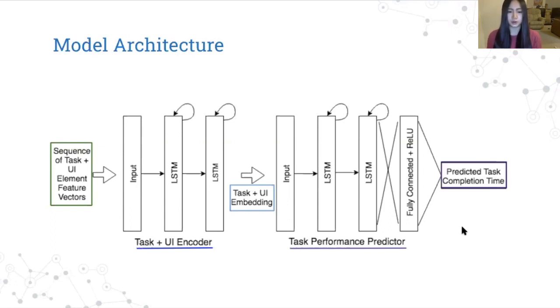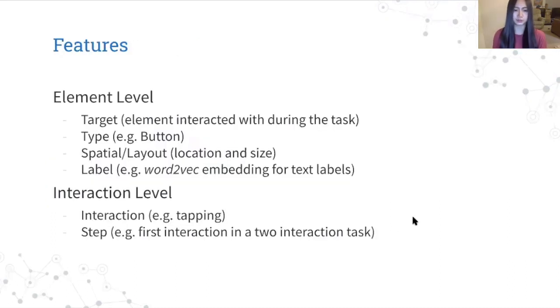So compared to the menu model, we have an additional LSTM layer in both the encoder and predictor to account for the increased complexity of our problem. Our features were selected because they will have an effect on task performance. So for each UI element, we have 13 different features that could be divided into these four categories. We have the target feature, which indicates if the element will be interactive during the task. And next, we have the element's type, and the element's type affects its saliency, as well as how users will interact with it. And then we have the layout features, so the size and location of each element. And our model also handles grouped elements, like a group of buttons enclosed in a container, and we have the corresponding layout features for the container. Then we have information on the element's label, like the word2vec embedding for the text label, which will affect how quickly users can find it.